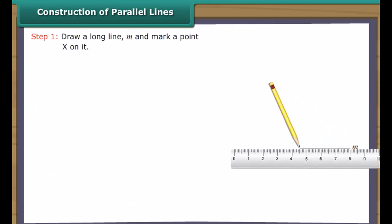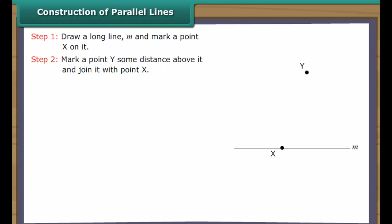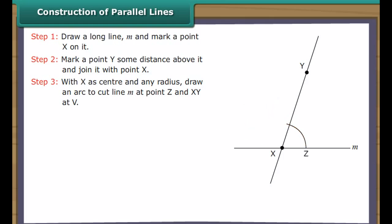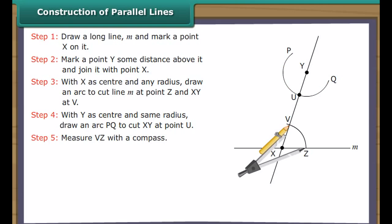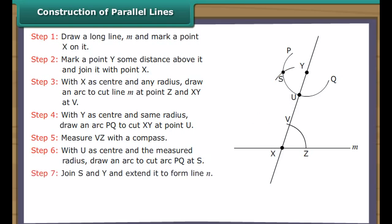Draw a long line M and mark a point X on it. Mark a point Y some distance above it and join it with point X. With X as center and any radius, draw an arc to cut line M at point Z and XY at V. With Y as center and the same radius, draw an arc PQ to cut XY at point U. Measure VZ with a compass. With U as center and the measured radius, draw an arc to cut arc PQ at S. Join S and Y and extend it to form line N.